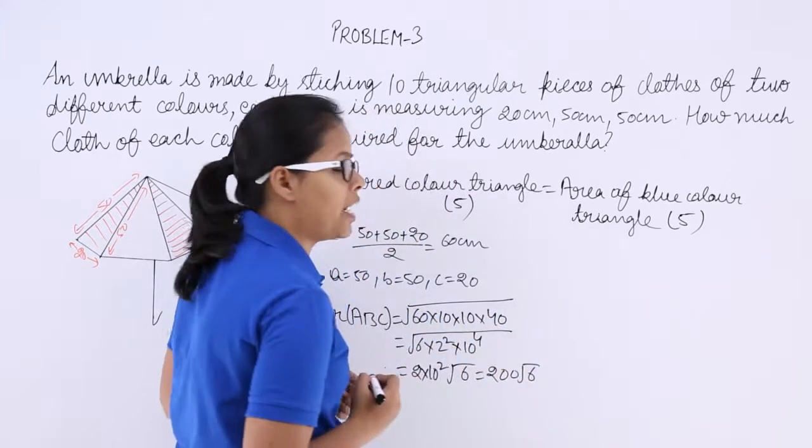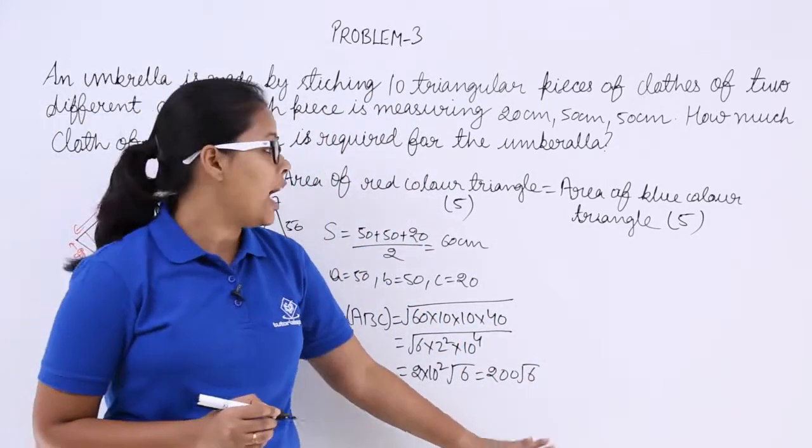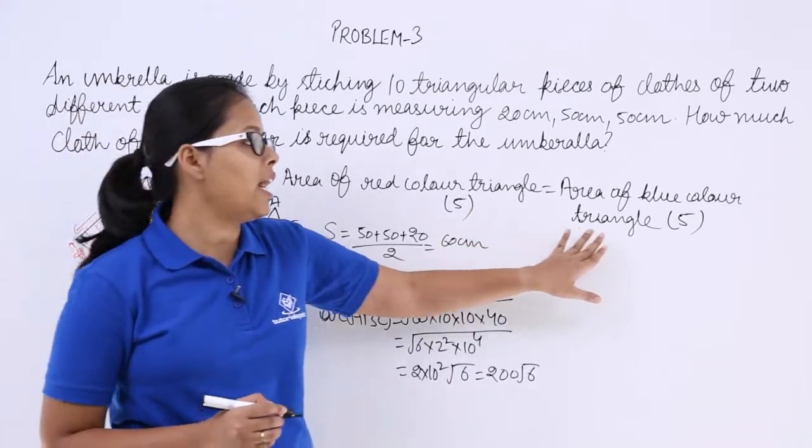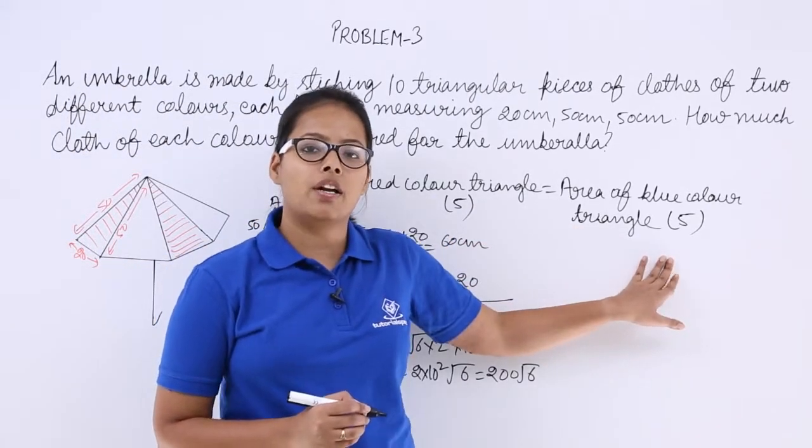Area of a triangular piece is this. And you know that there are 5 red colored triangles as well as 5 blue colored triangles.